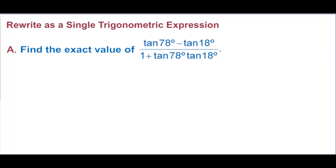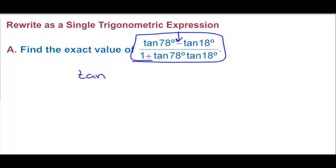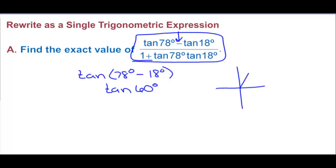Find the exact value of tangent of 78 degrees minus tangent of 18 degrees, over 1 plus tangent of 78 degrees times tangent of 18 degrees. This matches the tangent subtraction formula, so the whole expression equals tangent of 78 degrees minus 18 degrees, which is tangent of 60 degrees. The point for 60 degrees gives a tangent value of square root of 3.